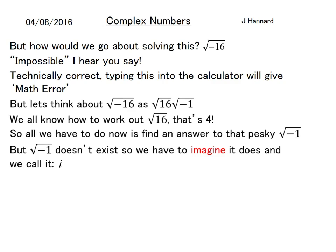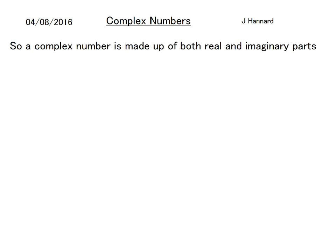But √-1 doesn't exist, so we have to imagine it does and we call it i. No prizes for guessing what i means—imaginary. So that means our answer to √-16 is ±4i because you've got 4 and you're timesing it by √-1, which we're going to call i.